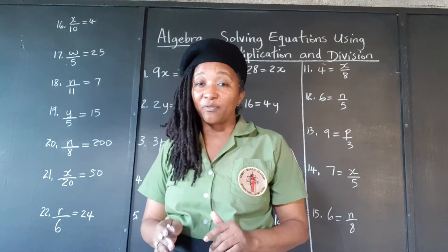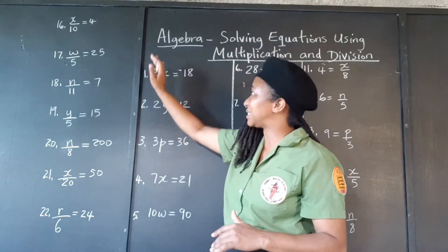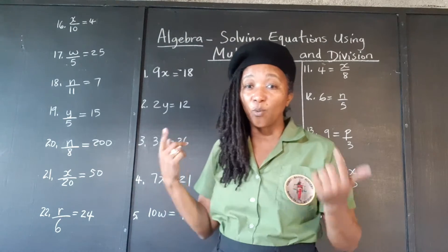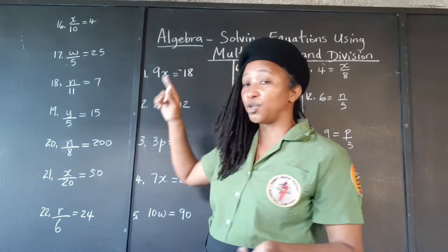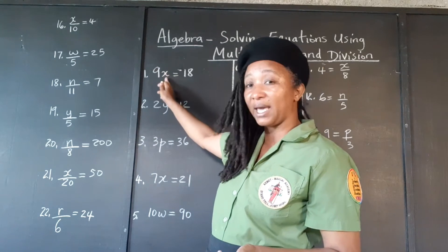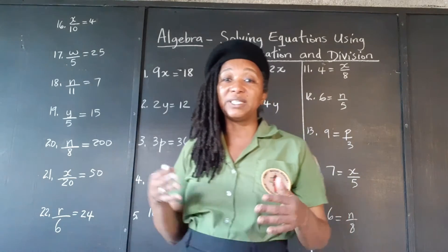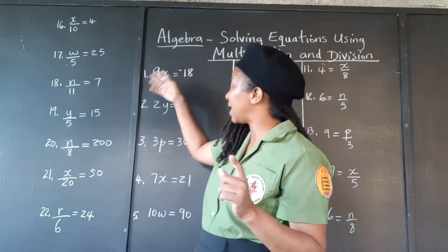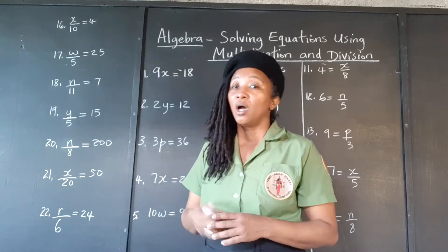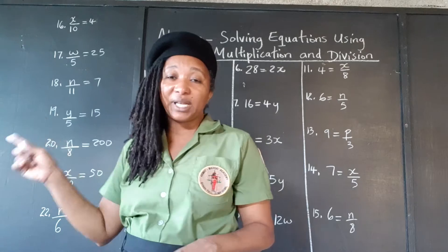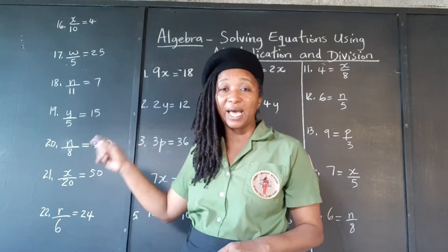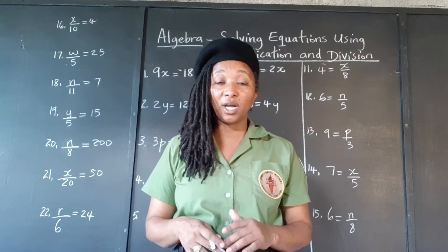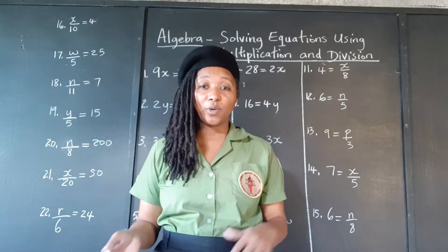In order to get the variable by itself, we need to cancel out the coefficient — we need to get rid of the 9 from beside the x. To get rid of the 9, to cancel it out, to make it equal to 1, we have to do the opposite. We are multiplying 9 by x, and the opposite of multiplication is division. We are going to divide the 9 by 9 to get rid of it. 9 into itself goes 1, and 1x is the same as just x. The catch is, if we divide by 9 on the left, we have to divide by 9 on the right to balance it so that we have not really changed the equation.